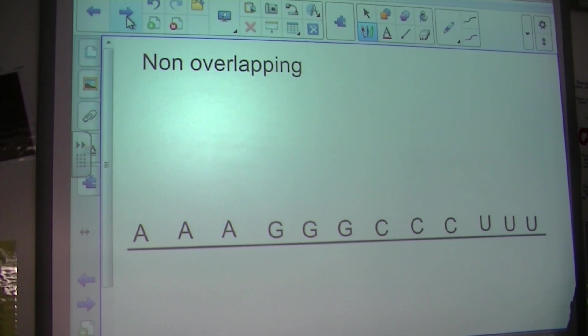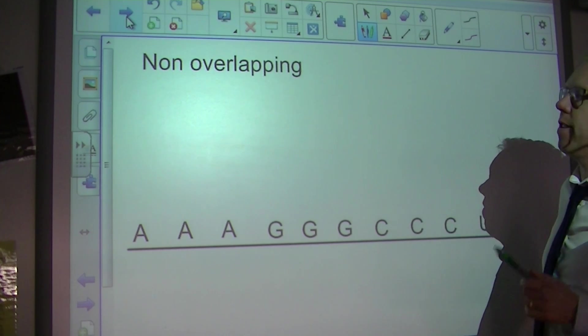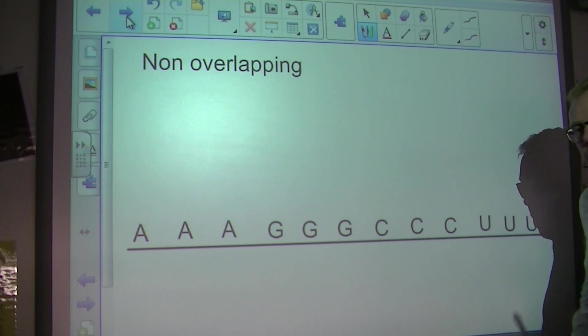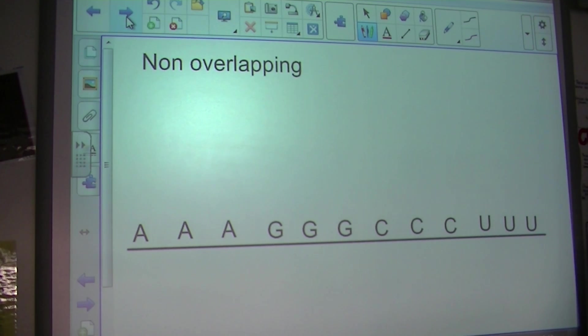Ok, there are three features of the genetic code that I want to talk to you about. The three features are that the genetic code is one, non-overlapping, two, degenerate, and three, universal. I'm going to go through each one, one step at a time.